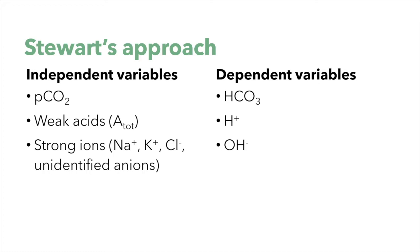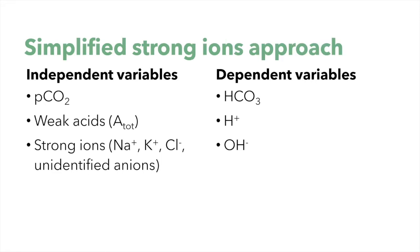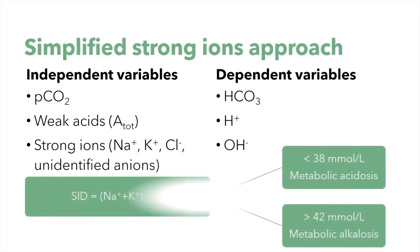Strong ions are electrolytes and other anions such as lactate, ketones, phosphates, and sulfates. Based on this approach we cannot include bicarbonate in the calculation for a metabolic alteration, and to calculate the strong ion difference we have to include all the independent variable levels. The advantage is that this method is more accurate and takes into account many more substances, but in practice we often don't have all these values. In a simplified approach, we can just consider sodium, potassium, and chloride — the most abundant ions in plasma — and lactate can be added to chloride or considered separately.